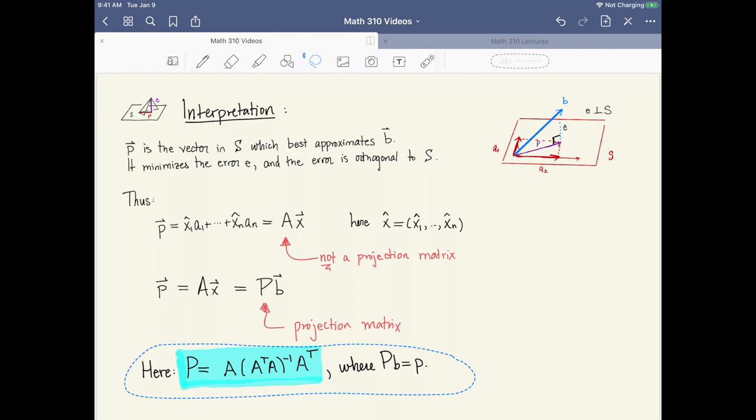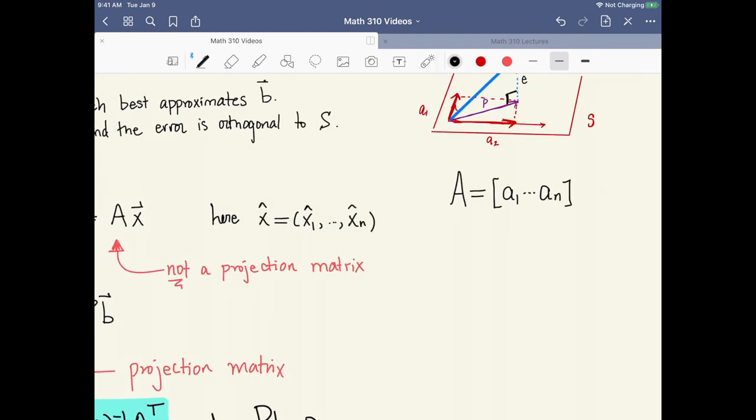And that's the situation that we're in here because how we formed the matrix A was using the basis vectors of the vector space S. A consisted of the column vectors A1 through AN stacked next to each other and as basis vectors these are all going to be linearly independent.